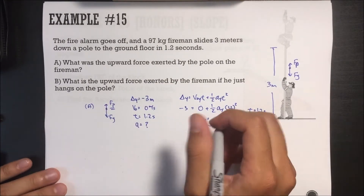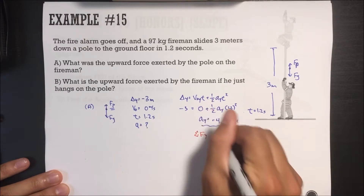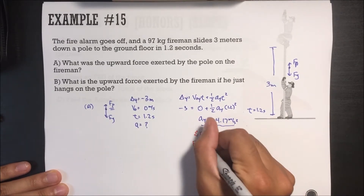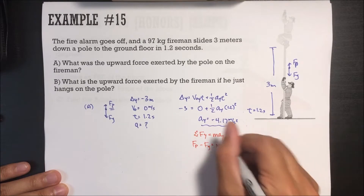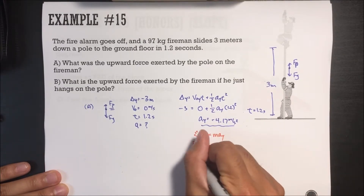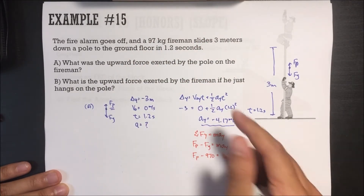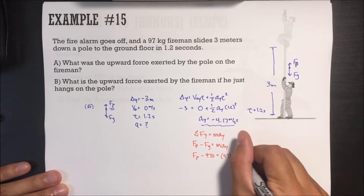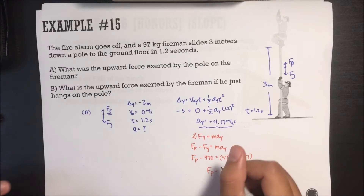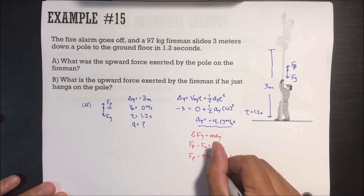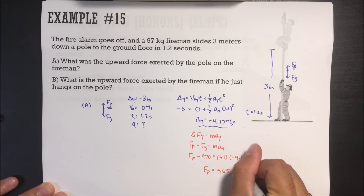Now we can find the force of the pole. Sum of all forces in Y equals mass times acceleration in Y. Force of the pole minus force of gravity equals mass of fireman times acceleration. Force of gravity is 97 times 10, which is 970 newtons. Mass is 97, acceleration is negative 4.17. Doing the math — 970 minus 97 times 4.17 — we get that the force of the pole is 565.5 newtons.